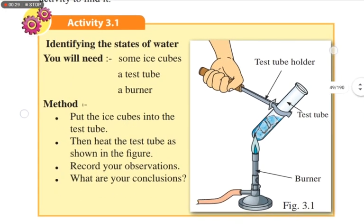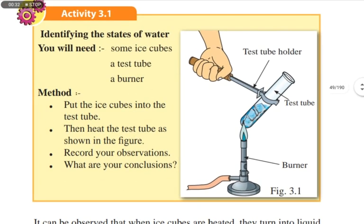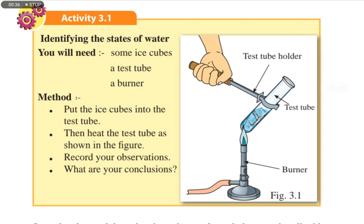We are going to discuss Activity 3.1 in your textbook, which is about identifying the states of water. You will need some ice cubes, a test tube, and a burner — you can use a Bunsen burner or a spirit lamp. The method is: put ice cubes into the test tube, then heat the test tube as shown in the figure, and record your observations.